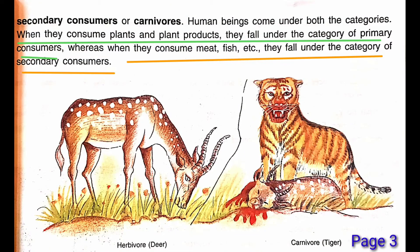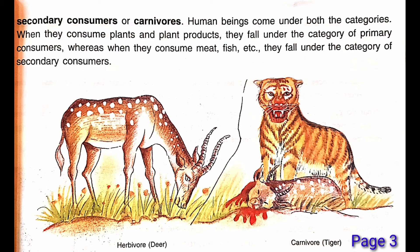Human beings dono category mein aate hain. When they consume plants and plant products, they fall under the category of primary consumers. Whereas when they consume meat, fish, etc., they fall under the category of secondary consumers. Jo aise hain — plant products bhi khate hain, animal products bhi khate hain, meat, flesh, egg yeh sab bhi khate hain — unko hum omnivores kehenge. That's why human beings dono category mein hain.